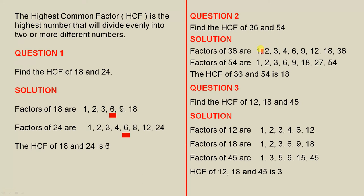The numbers that divide into 36 evenly are these ones here: 1, 2, 3, 4, 5, 6, 7, 8 — there are 9 of them. So all those 9 numbers divide evenly into 36.